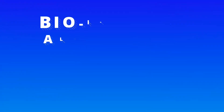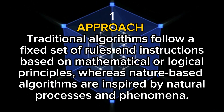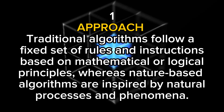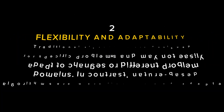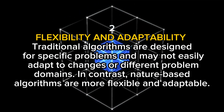We've now seen three nature-inspired algorithms. It is important to know that bio-inspired algorithms differ from traditional algorithms in a lot of ways. First, approach: traditional algorithms follow a fixed set of rules and instructions based on mathematical or logical principles, whereas nature-based algorithms are inspired by natural processes and phenomena, taking inspiration from biological, physical, or social systems to guide the search process. Second, flexibility and adaptability: traditional algorithms are designed for specific problems and may not easily adapt to changes. In contrast, nature-inspired algorithms are more flexible and can be applied to a wide range of problem domains, handling complex optimization problems with changing or uncertain conditions.